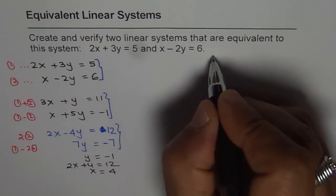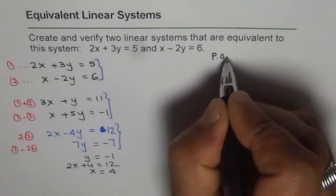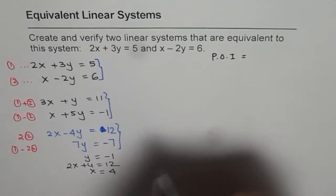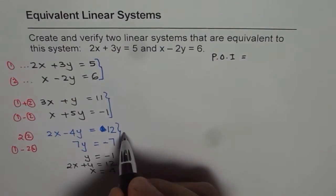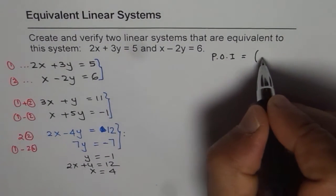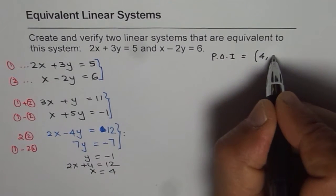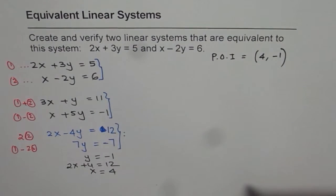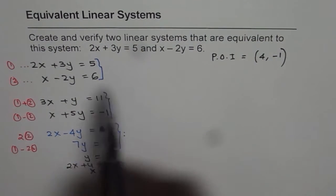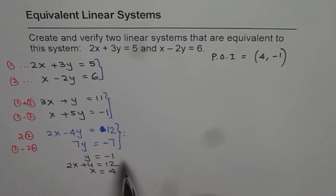What I have got is one point of intersection, which is a solution for the third set of linear system. And the solution is x value of 4 and y value of minus 1. Now if this is the solution for all the equations, then they are all equivalent linear systems.